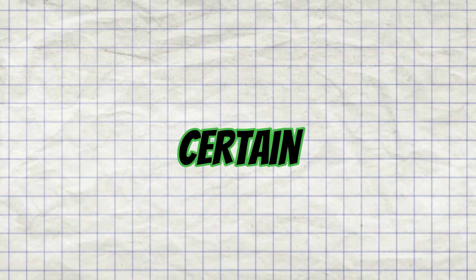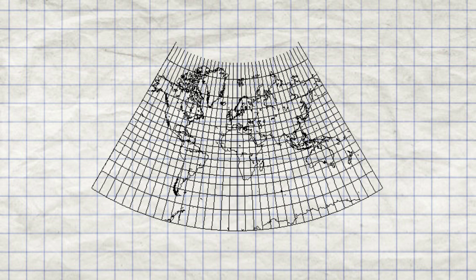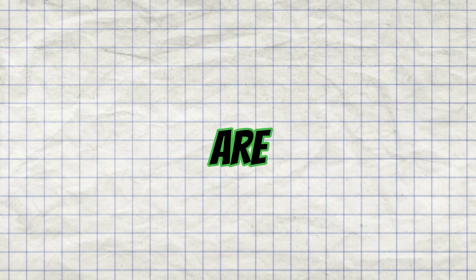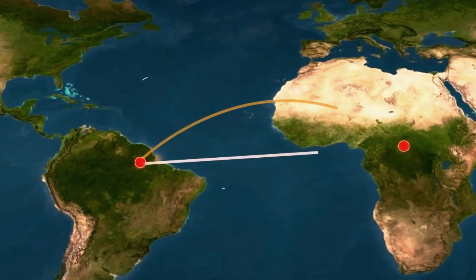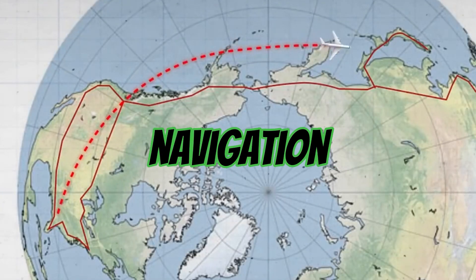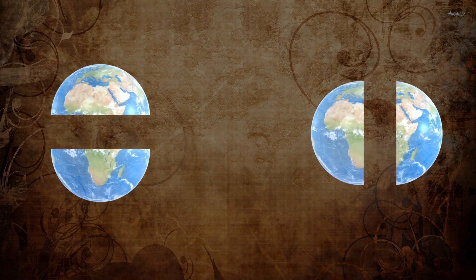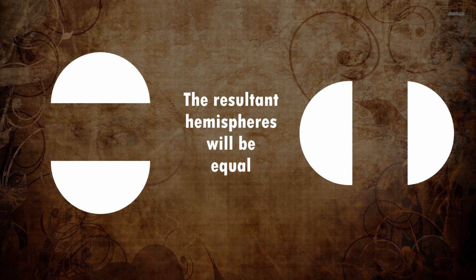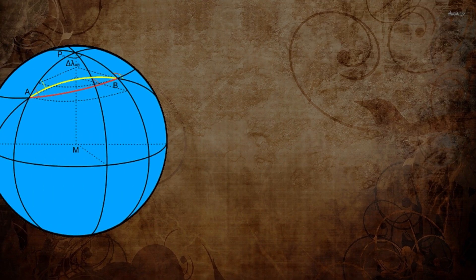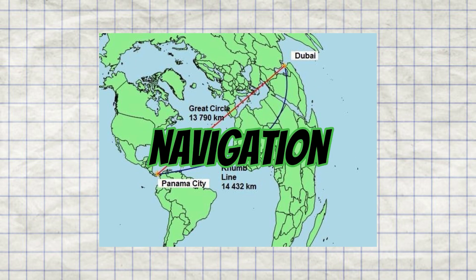There are certain map projections, like the Lambert conformal conic projection, which show straight lines as the most direct routes accurately, but these map projections are much less common to find. Back to the Mercator projection: a curved flight path is often called a great circle route, also known as orthodromic navigation, which means that if you took the flight path and cut Earth in half on that line, you'd be left with two evenly sized halves. A straight line on the map crosses all meridians at the same angle, and is therefore called a rhumb line, or loxodromic navigation.